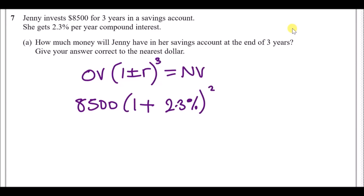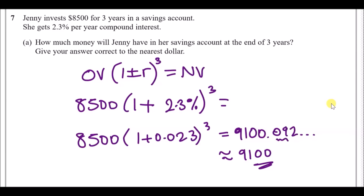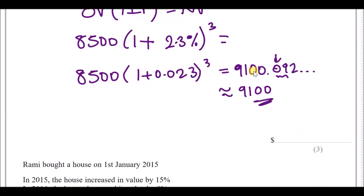So it's eight thousand five hundred times one plus 2.3% — use the percent button on your calculator. Alternatively, 2.3% as a decimal is 0.023, giving one plus 0.023. Raising this to the power of three gives nine thousand one hundred point zero nine two. Rounded to the nearest dollar, the answer is nine thousand one hundred dollars.